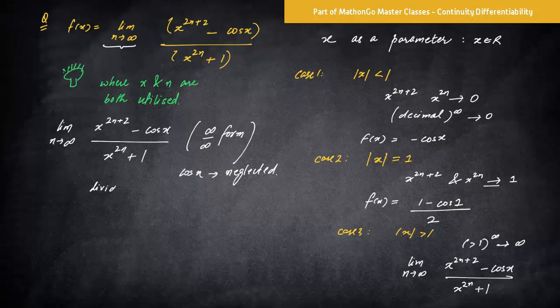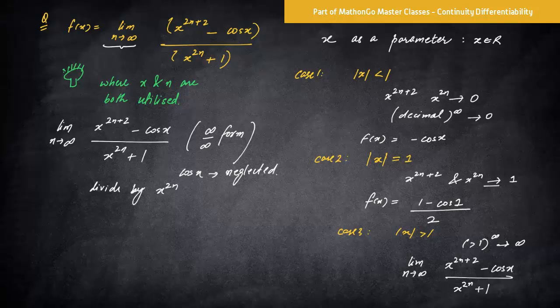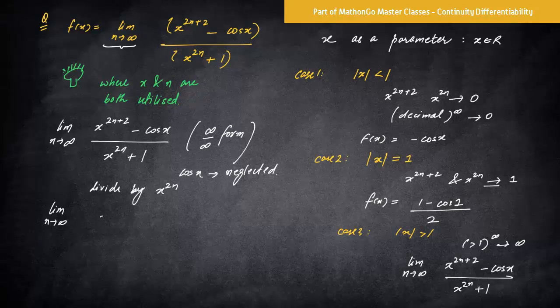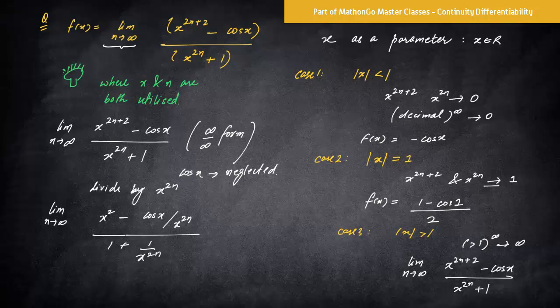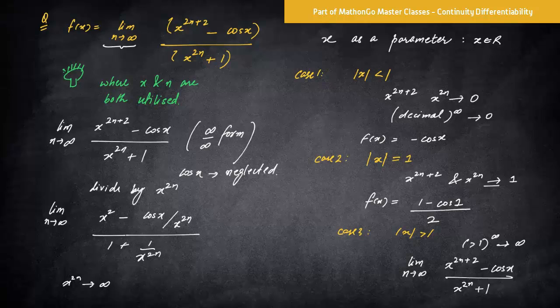So how do you solve infinity by infinity form in the polynomials? We divide by the power, right? So I divide the whole by let's say x raised to power 2n. Okay, so if I divide whole by x raised to power 2n, so what will happen is this will become x square, this will be minus cos x by x raised to power 2n divided by one plus one by x raised to power 2n.